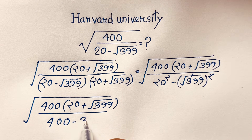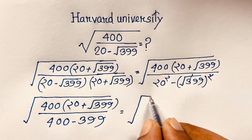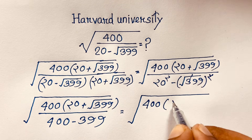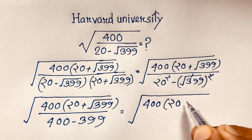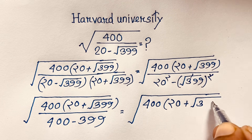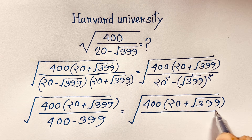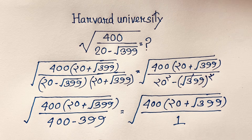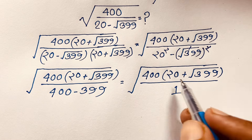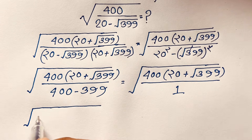At this point, you can see the expression has square root 400 times (20 plus square root of 399) over 1, because 400 minus 399 equals 1. Now you can see this expression: it will be square root of 400 times (20 plus square root of 399).